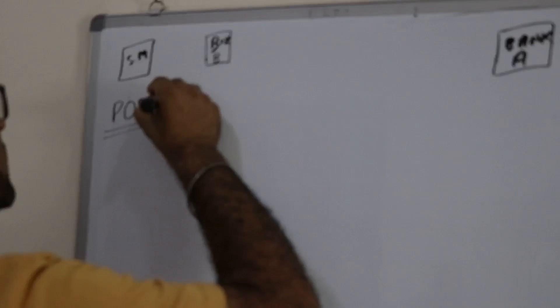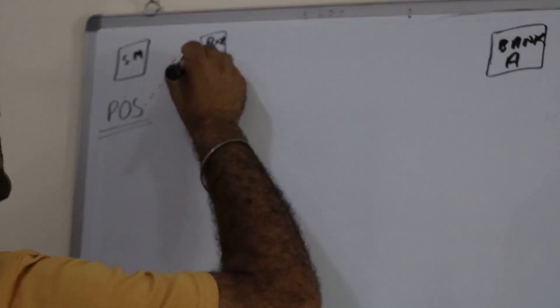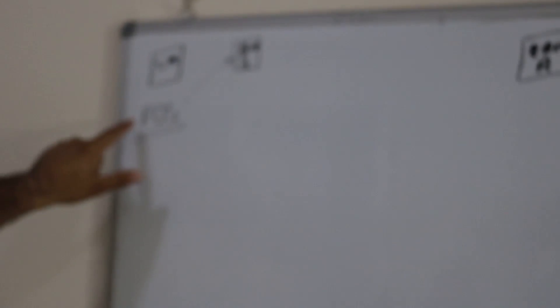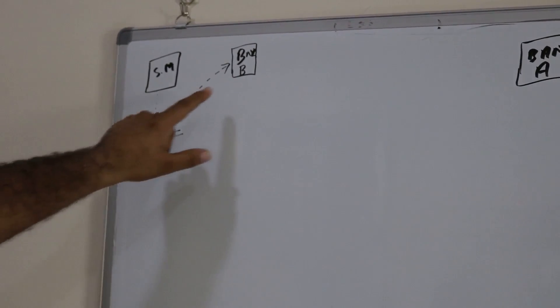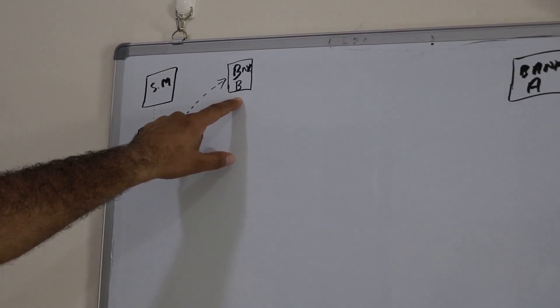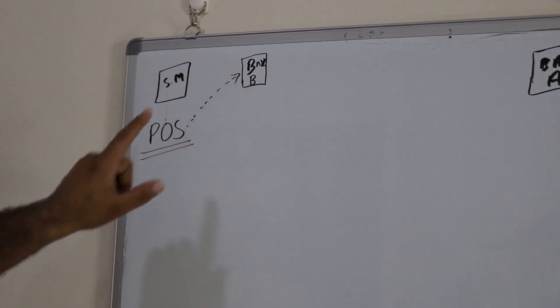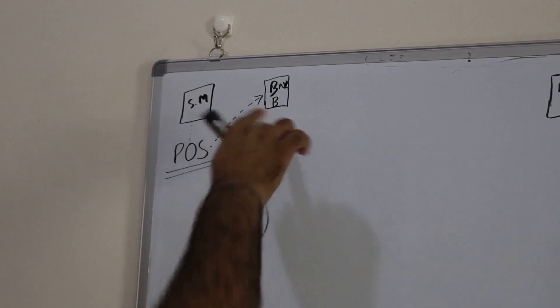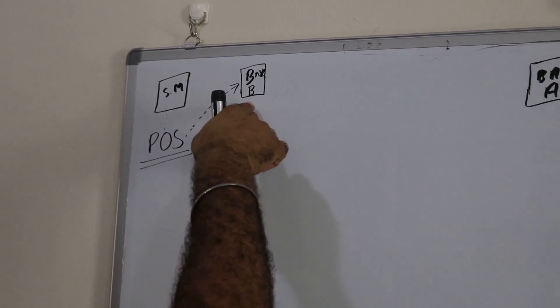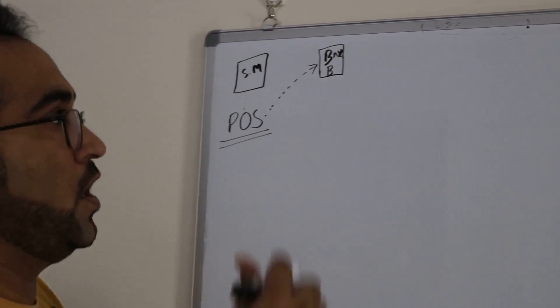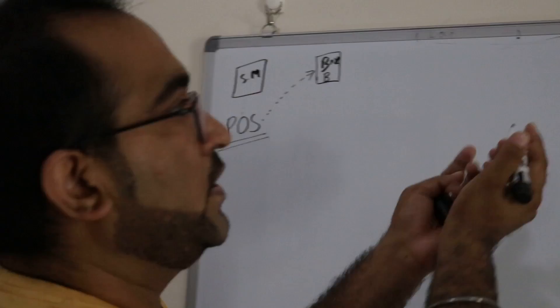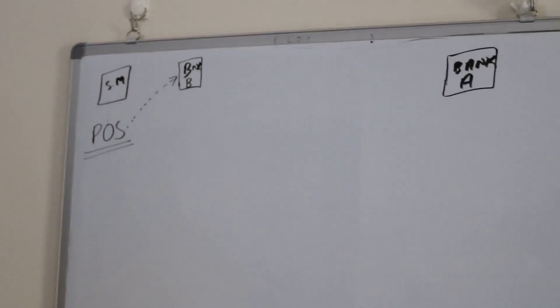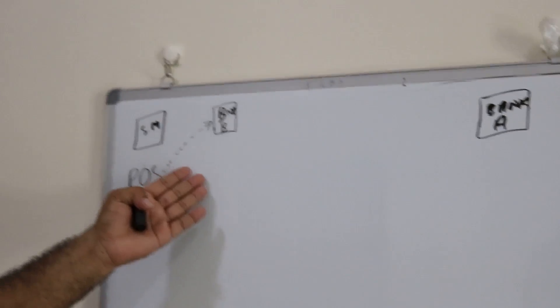When you do the transaction at the POS terminal, the transaction reaches Bank B because the POS terminal is connected to Bank B's network. So the transaction can easily reach Bank B since both are on the same network. But when Bank B receives the transaction, how does Bank B know it needs to route this transaction to Bank A? They cannot directly, because they have separate networks.